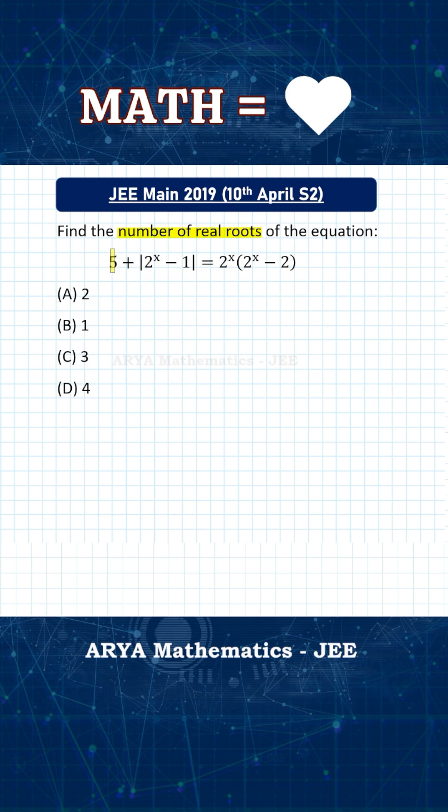To use graphical method for this problem, the first step will be that replace 2 raised to x with alpha. So if you do this substitution, then the left hand side will be 5 plus mod alpha minus 1. And on right hand side, you will get alpha into alpha minus 2.